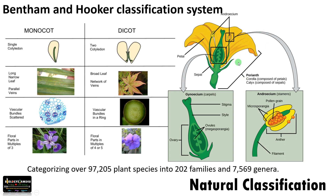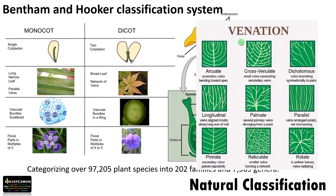To make it clearer: in a flower, if there are five floral parts it is called pentamerous; if there are three, it is called trimerous. The number of stamens, the type of ovary — everything is considered for classification. Venation is also considered: whether it is reticulate, dichotomous, or parallel. All these characters are considered.